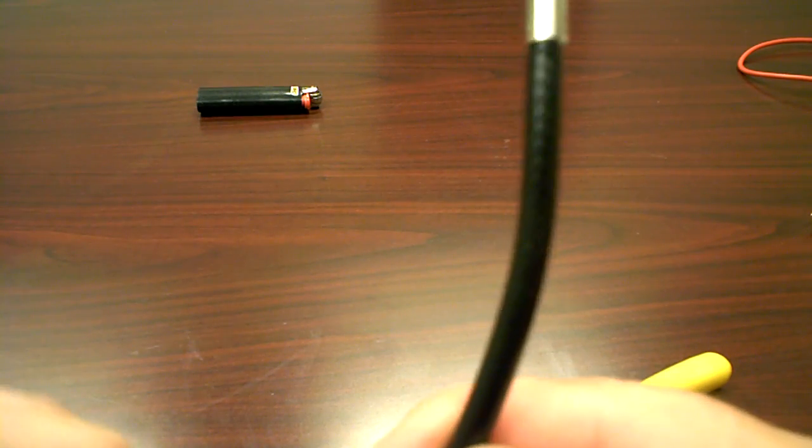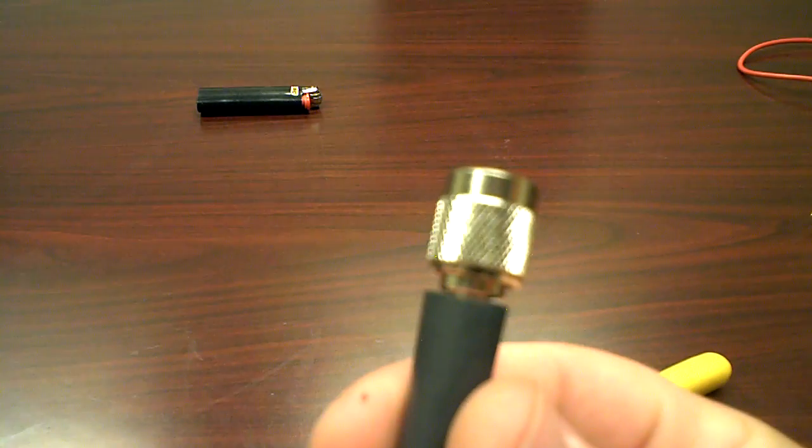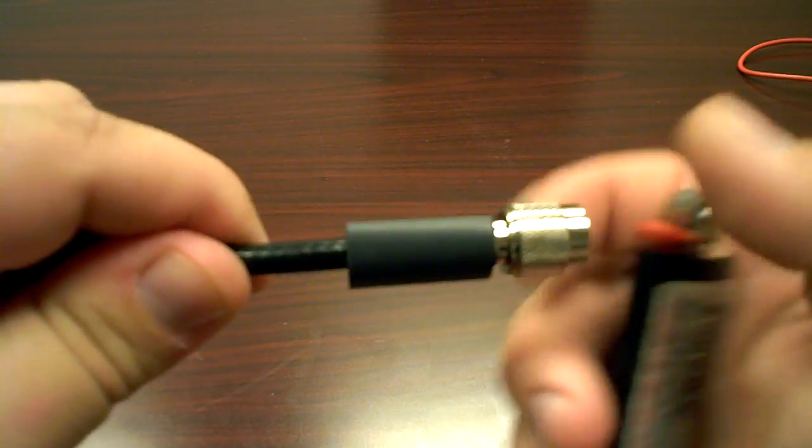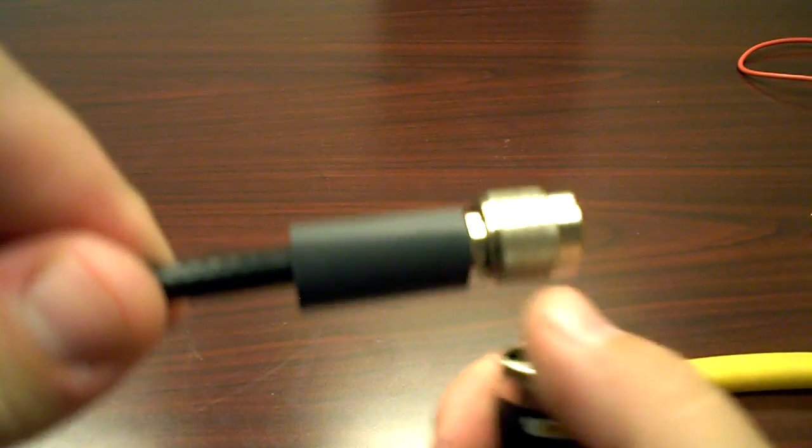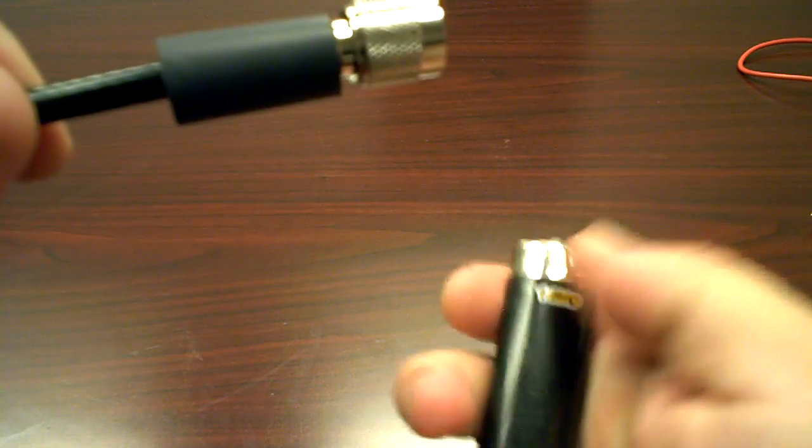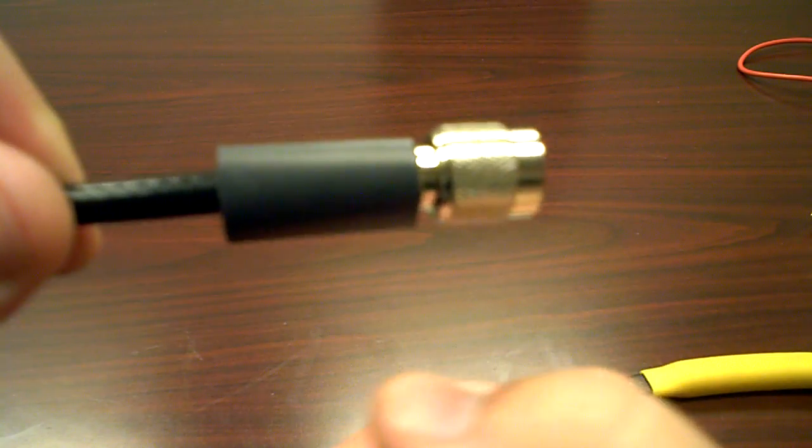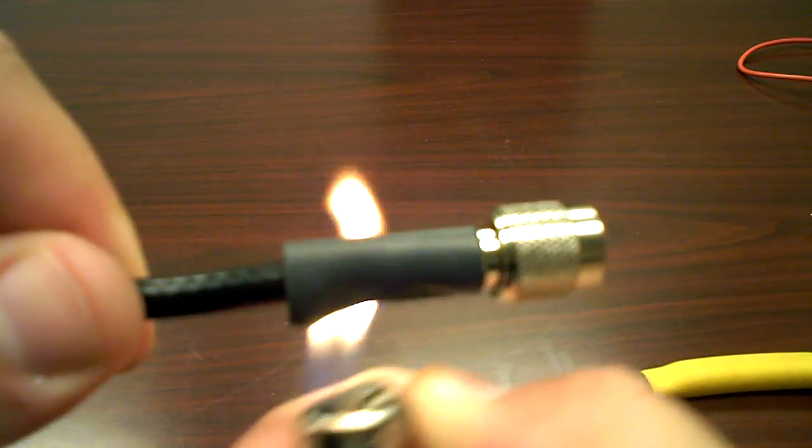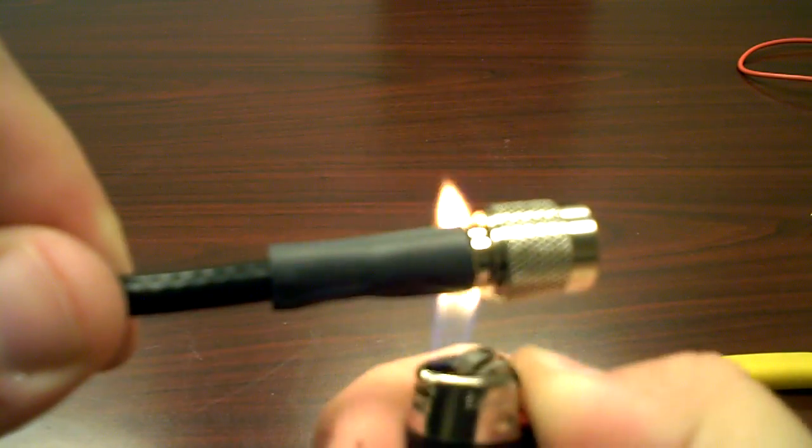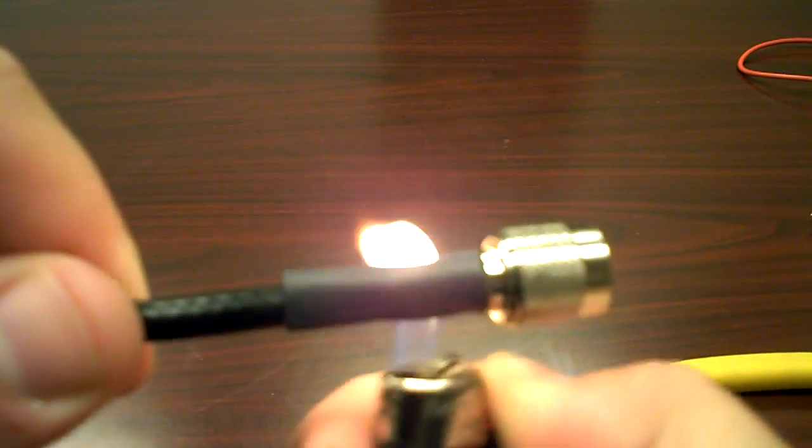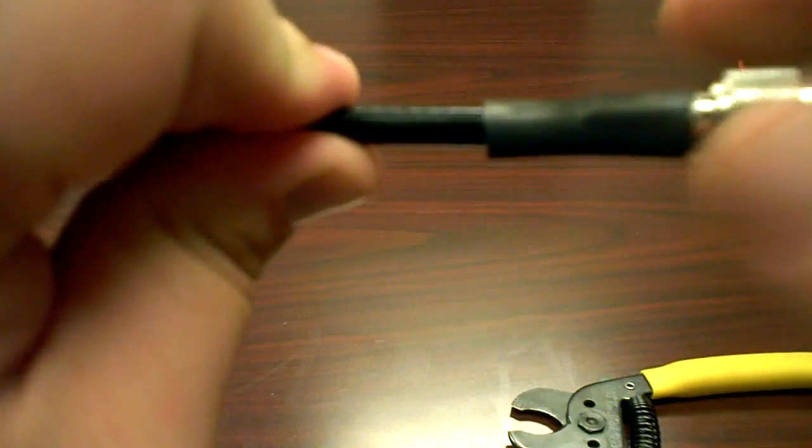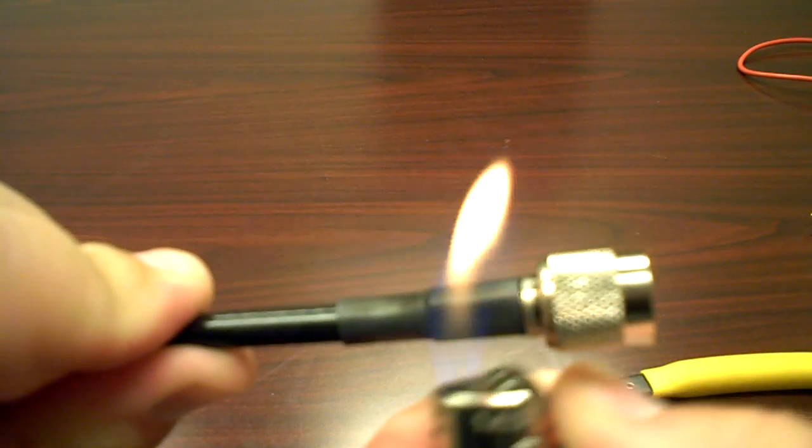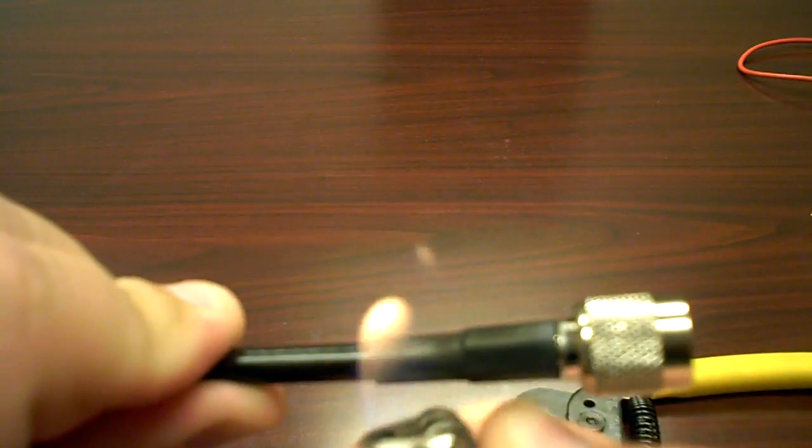Basically next I'm going to take and slide my heat shrink up. And I'm sure most of you are familiar with heat shrink if you're not. It can be purchased at Radio Shack, purchased at Walmart. Basically you just take a standard Bic cigarette lighter, any cigarette lighter fire, heat source. Basically you're going to start heating it, and that's going to start to shrink. Hence the name heat shrink. Turn your connector over and do the other side of it.